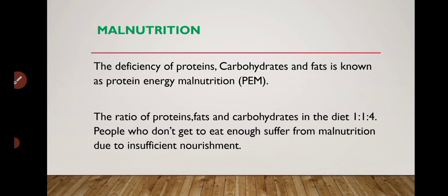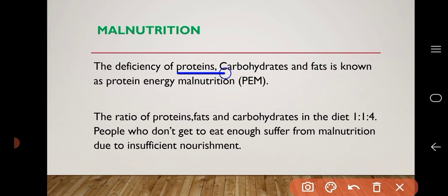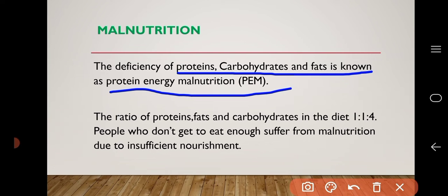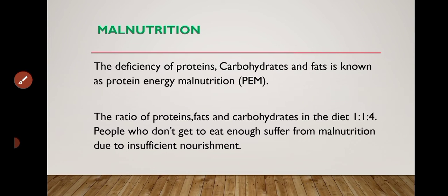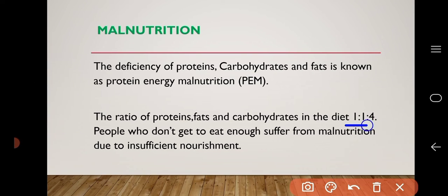Malnutrition: the deficiency of proteins, carbohydrates, and fats is known as protein energy malnutrition, or PEM. The ratio of protein, fats, and carbohydrates in the diet is 1:1:4. People who do not get enough to eat suffer from malnutrition due to insufficient nourishment.